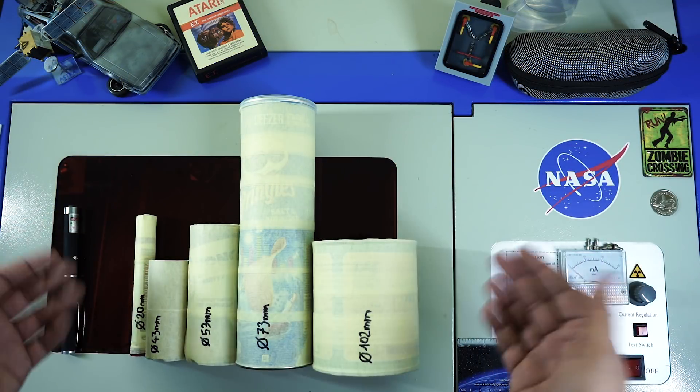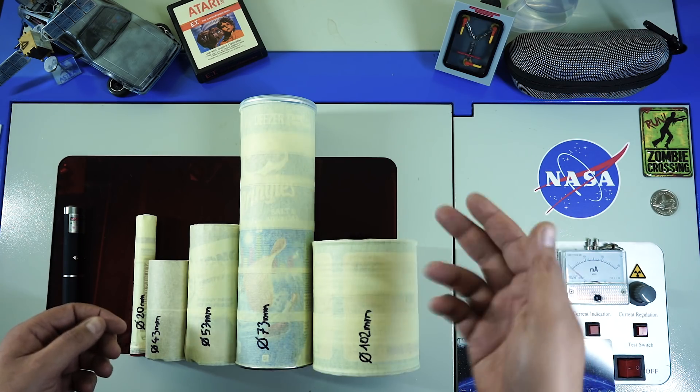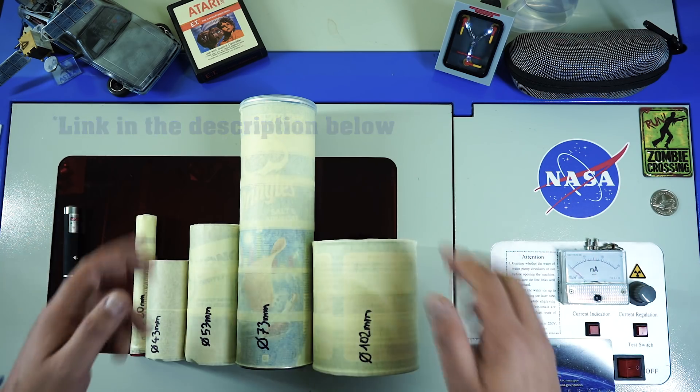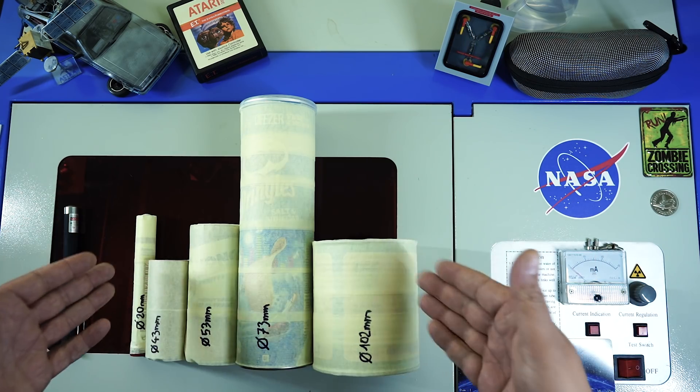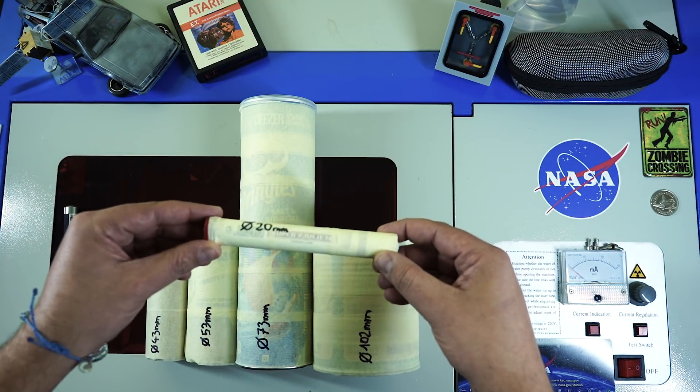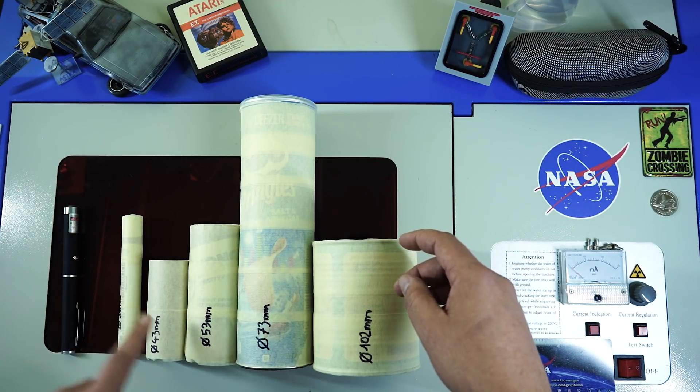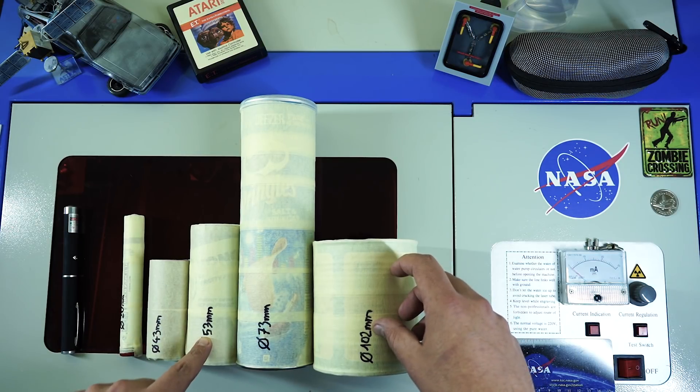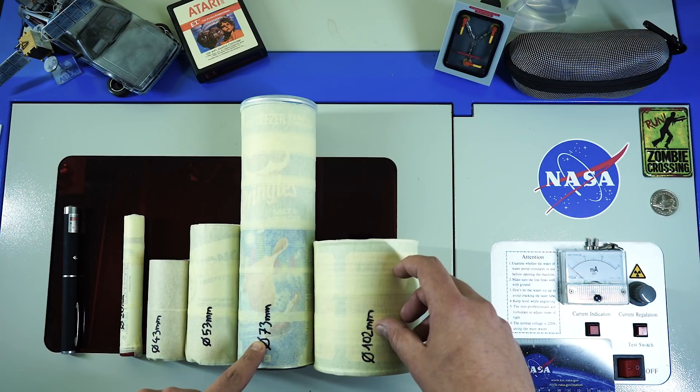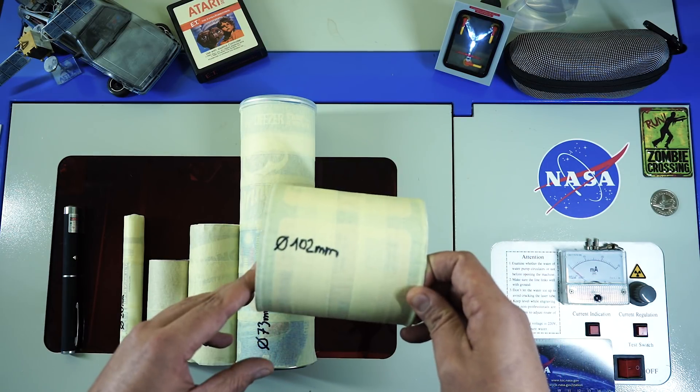I will take some notes and make you an Excel table with measurements that work for me, so you don't have to lose much time. Now, I gathered together some cylinders with different diameters. Starting with a 20mm cylinder, a 43mm cylinder, a 53mm cylinder, a 73mm cylinder and a 102mm cylinder.